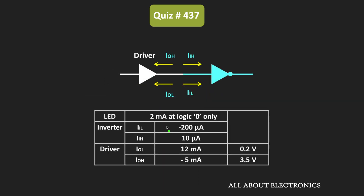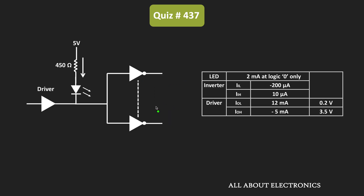That is the reason for the negative values for these two currents. But here during our calculation, we will assume the actual direction of these two currents. Now, considering this, let us find the fanout of the driver circuit. As we have seen in a recent video, for any circuit there are two fanouts — that is the high state fanout and the low state fanout — and the actual value of the fanout is the minimum of these two values.